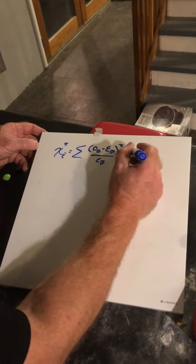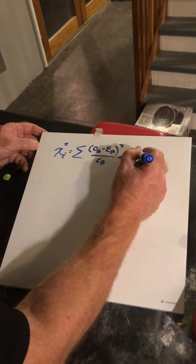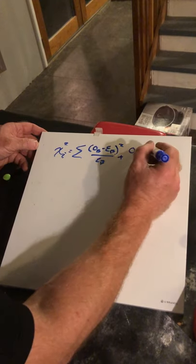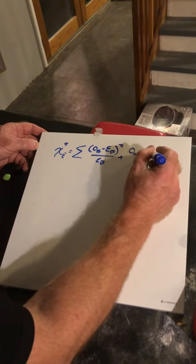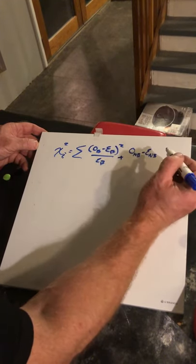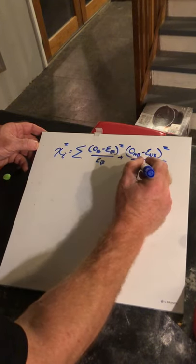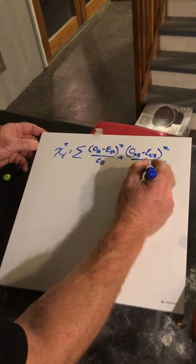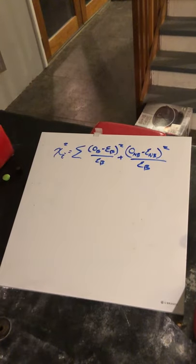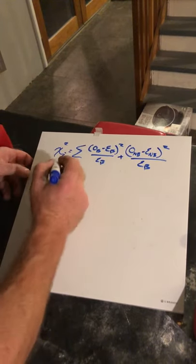Of the observed buckle matches minus the expected buckle matches squared divided by the expected buckle matches, plus the observed no buckle matches minus the expected no buckle matches squared divided by the expected buckle matches. Now, what we have to realize is,